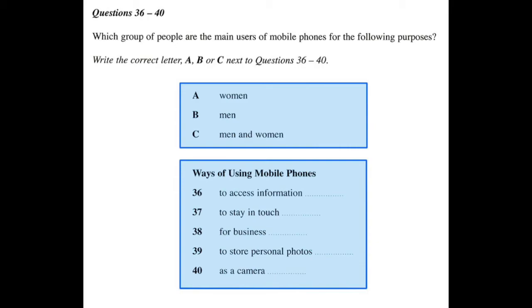One of the increasing usages of mobile phones is to get all sorts of data, such as phone numbers, the weather, train times, etc. And while there's been an attempt to set up connections with things that women might be interested in accessing, it is overwhelmingly men who do this.